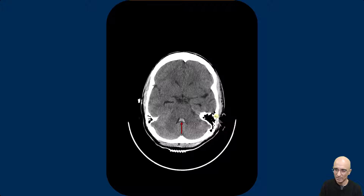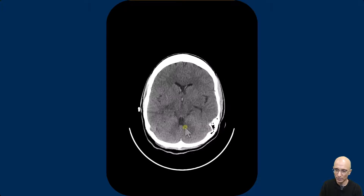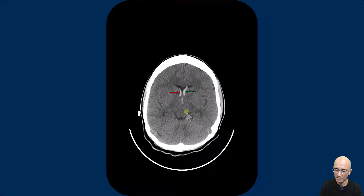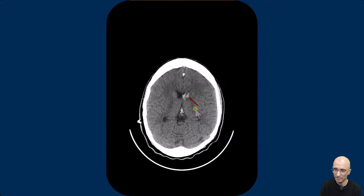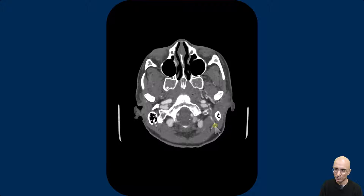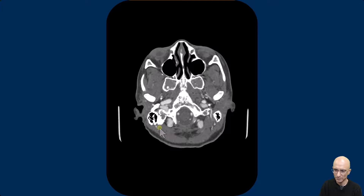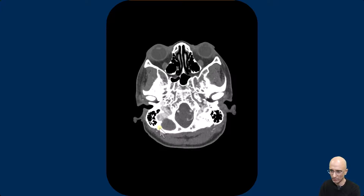Patient represented few years later with headache and CT head examination was performed. You can see hemorrhage in the fourth ventricle, the ventricles are mildly dilated, you can see hemorrhage in the lateral ventricles and third ventricle, and also hemorrhage in the caudate head. As part of workup, patient subsequently underwent CT angiogram examination to find the source of hemorrhage.